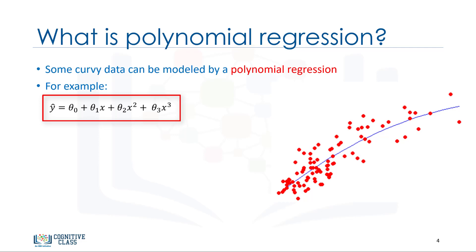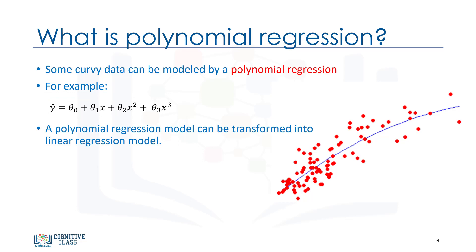where thetas are parameters to be estimated that makes the model fit perfectly to the underlying data. Though the relationship between x and y is non-linear here, and polynomial regression can fit them, a polynomial regression model can still be expressed as linear regression. I know it's a bit confusing, but let's look at an example.